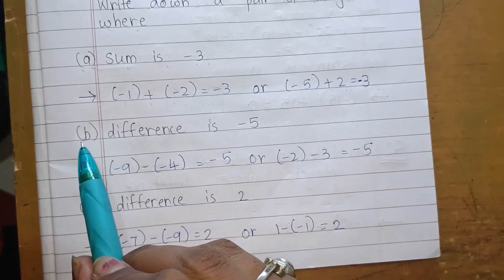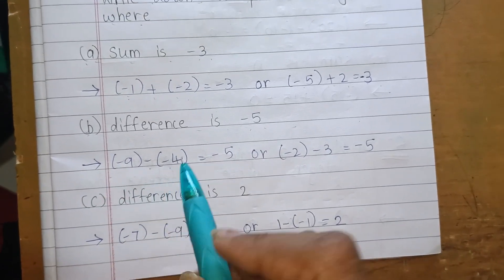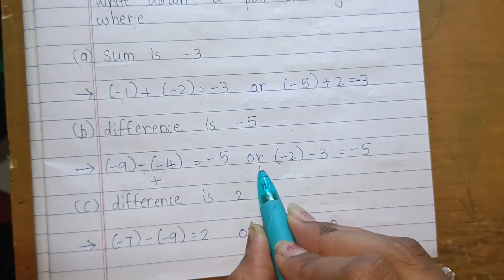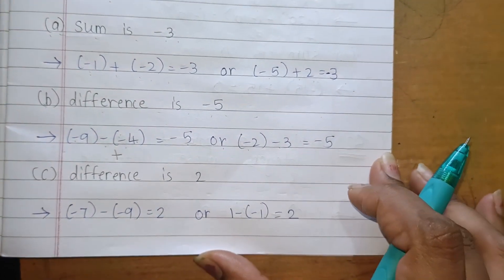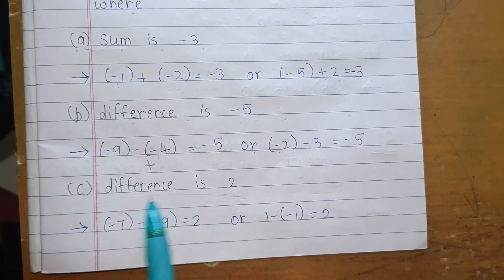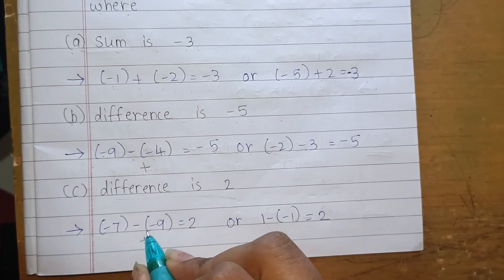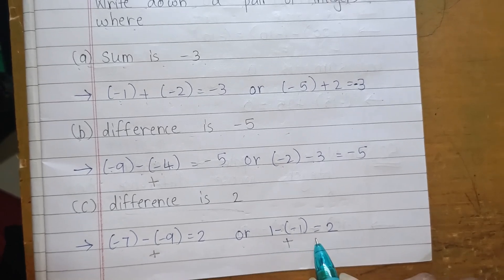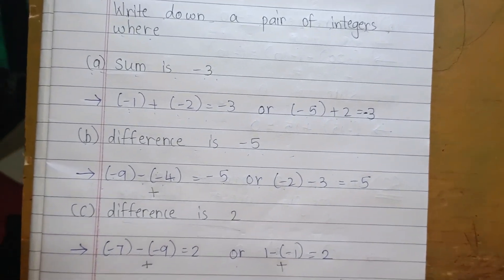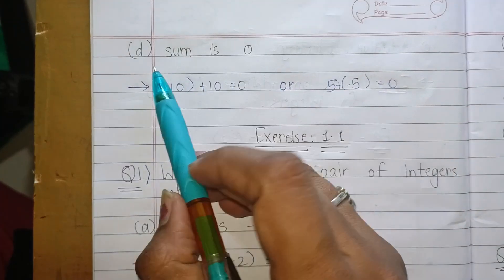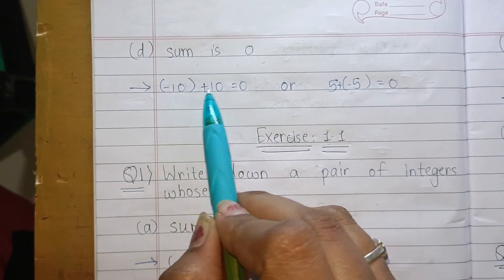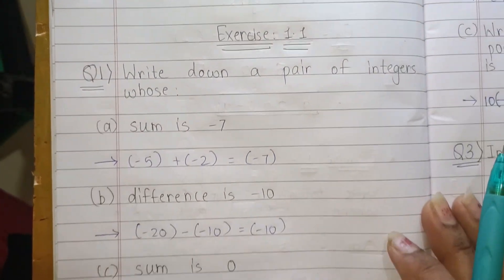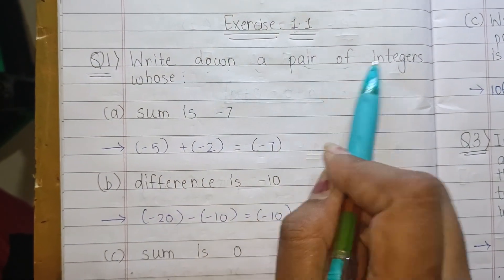Part b: difference is minus 5. Minus 9 minus minus 4 — minus minus becomes plus — so minus 9 plus 4 equals minus 5. Or minus 2 minus 3 equals minus 5. Part c: difference is 2. Minus 7 minus minus 9 — minus minus becomes plus — so minus 7 plus 9 equals 2. Or 1 minus minus 1 equals 1 plus 1 equals 2. Part d: sum is 0. Minus 10 plus 10 equals 0, or 5 plus minus 5 equals 0.